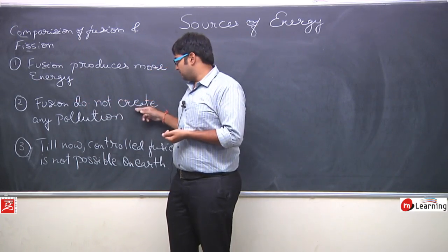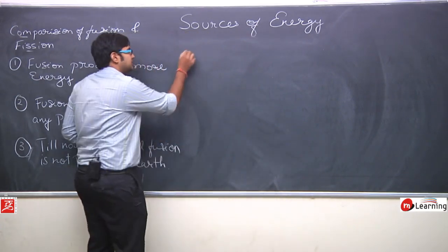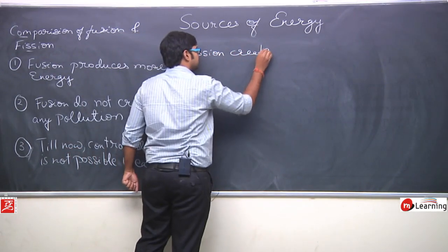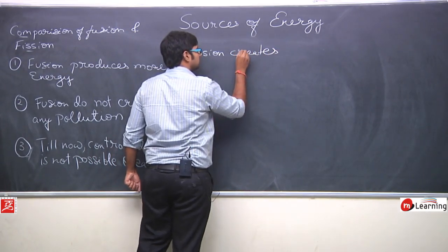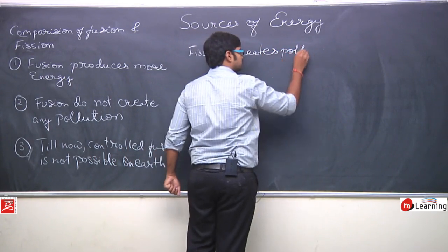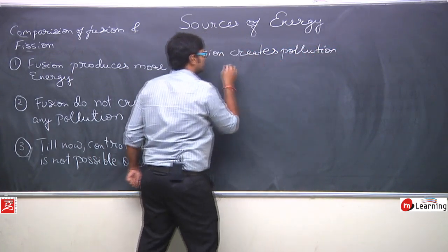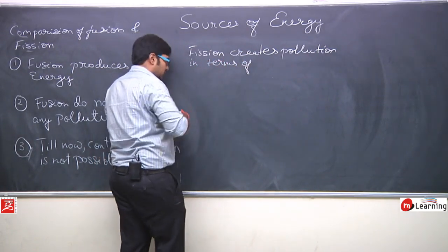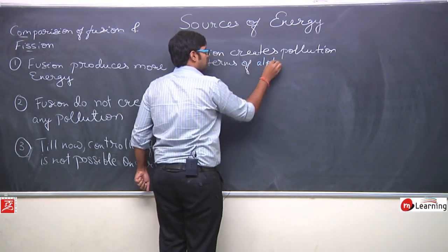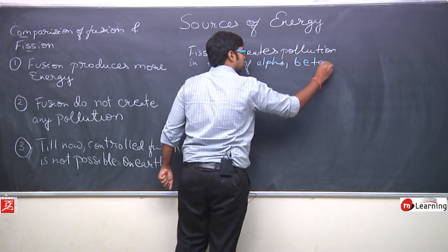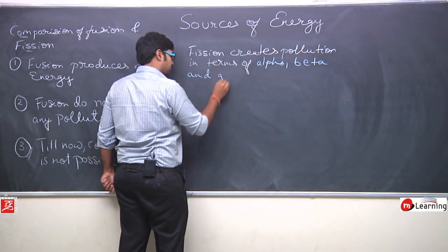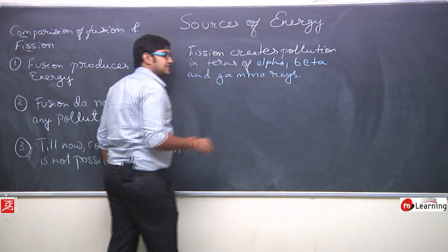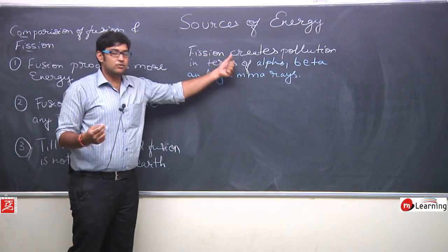Now abhi hum ne kaha ki fusion jo hai woh pollution create nahi karta. But jo fission process hai, fission creates pollution in terms of alpha, beta and gamma rays. Alpha, beta or gamma rays ki terms mein fission jo hai woh pollution create karta hai.